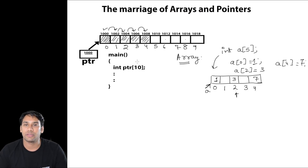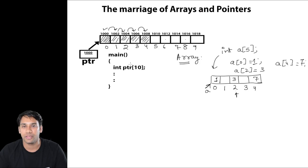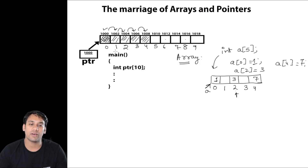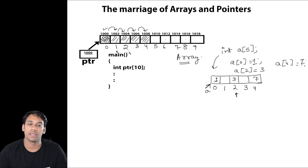Now if the size of an integer is 4 bytes on your machine, then every index location will consume 4 bytes. So the address of the next index location will be 1004, then 1008, and so on.